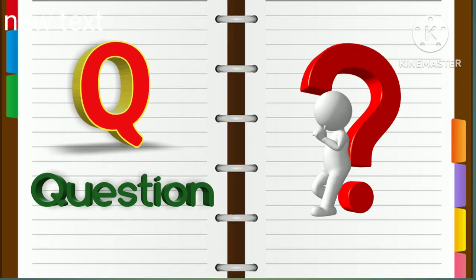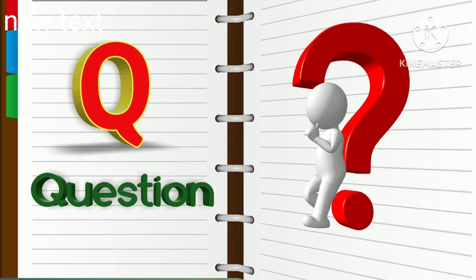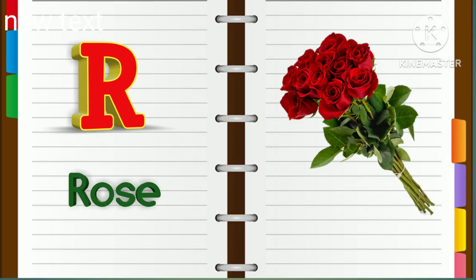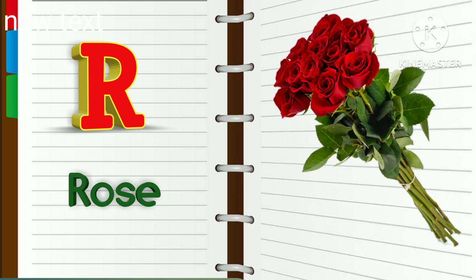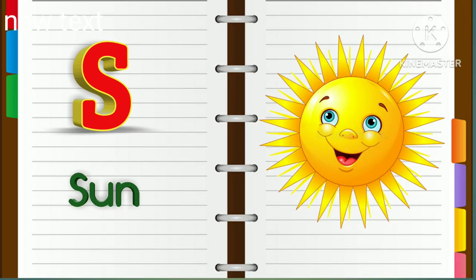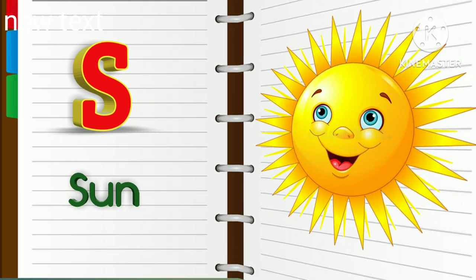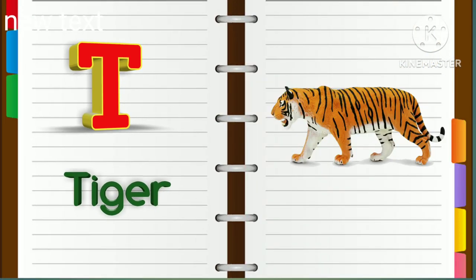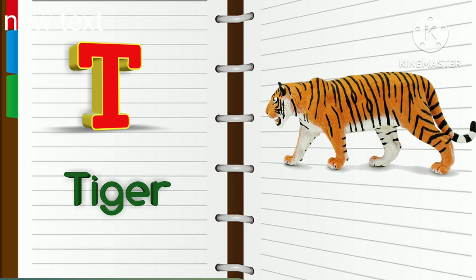Q. Q for question. R. R for rose. S. S for sun. T. T for tiger.